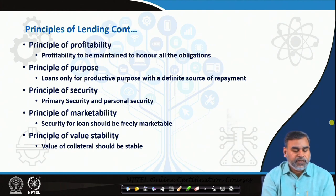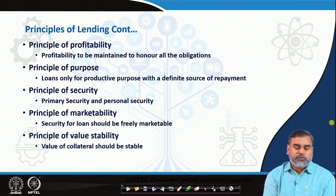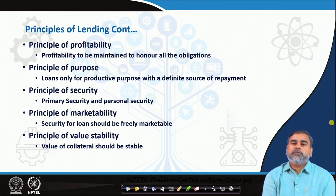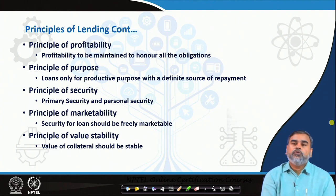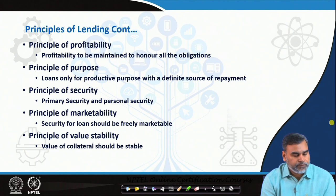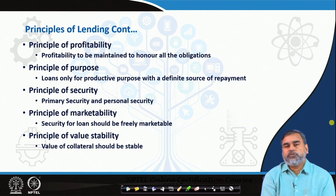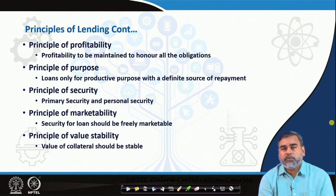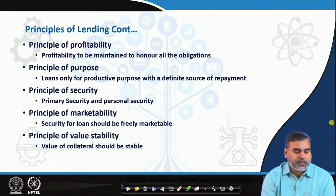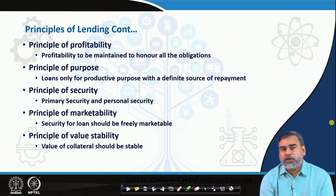Then another one is the principle of marketability. Marketability means whatever securities or collaterals you have given to the bank, the value of that particular collateral should not fluctuate much and should be easily marketable if required. If the bank needs to liquidate, it should be able to sell those securities in the market to recover the money, so that the bank's loss can be avoided. We also have to ensure that the value of the collateral should be stable — fluctuations should not be so high or low that total revenue generation is largely affected. The principle of value stability is quite important in terms of price fluctuations in this particular lending activity.